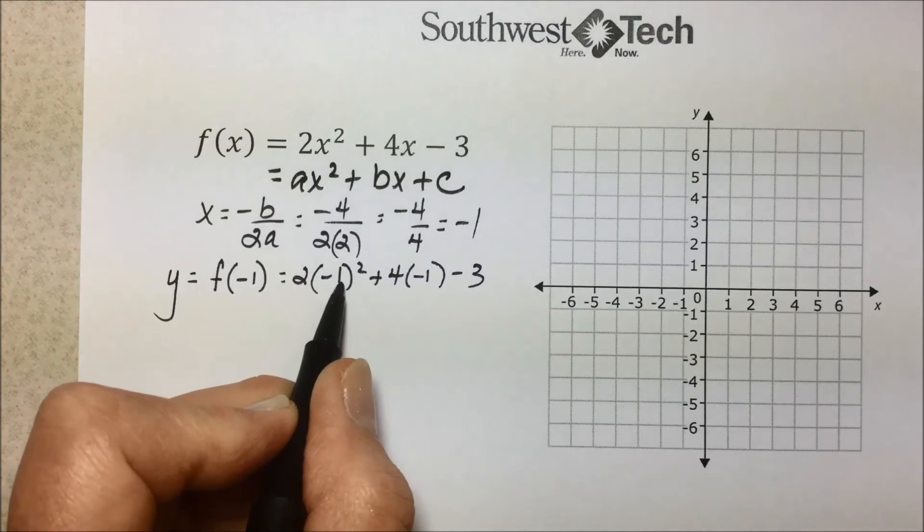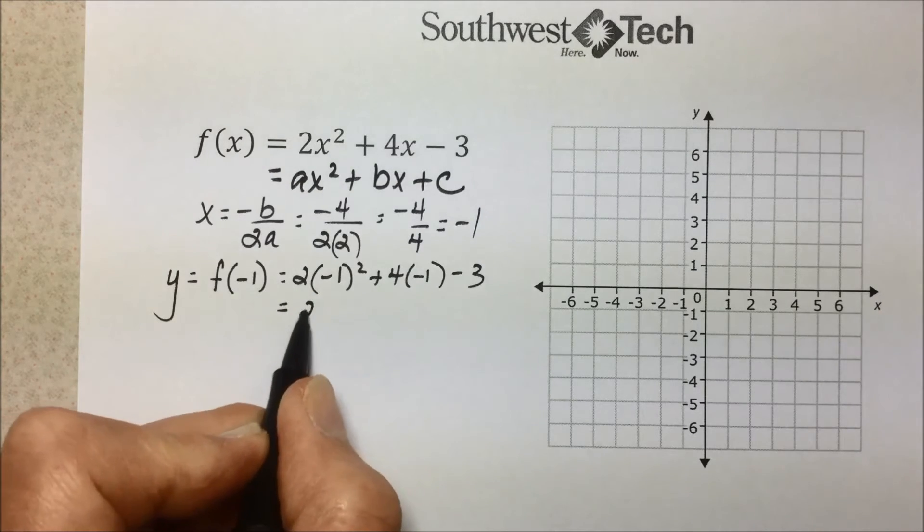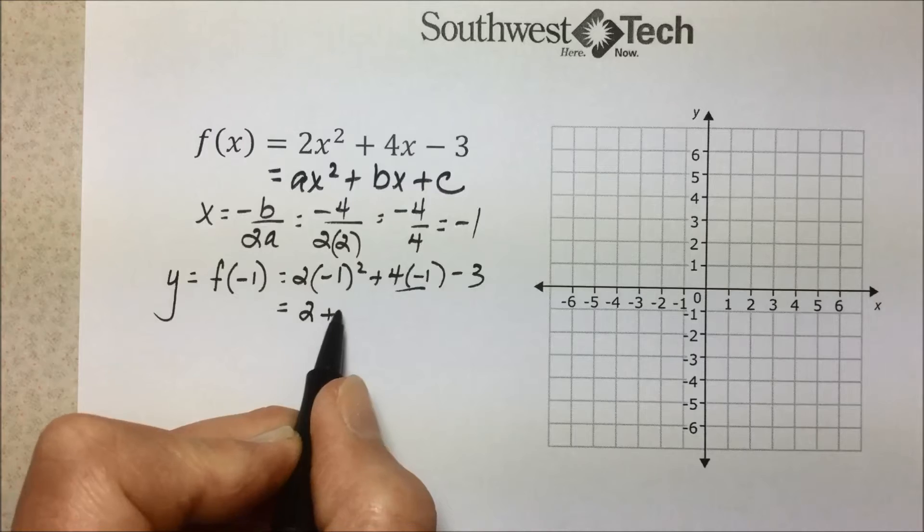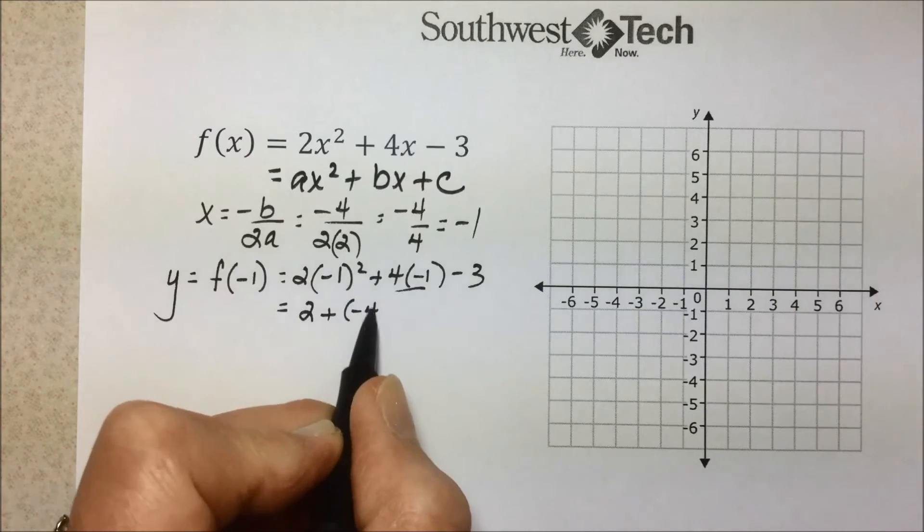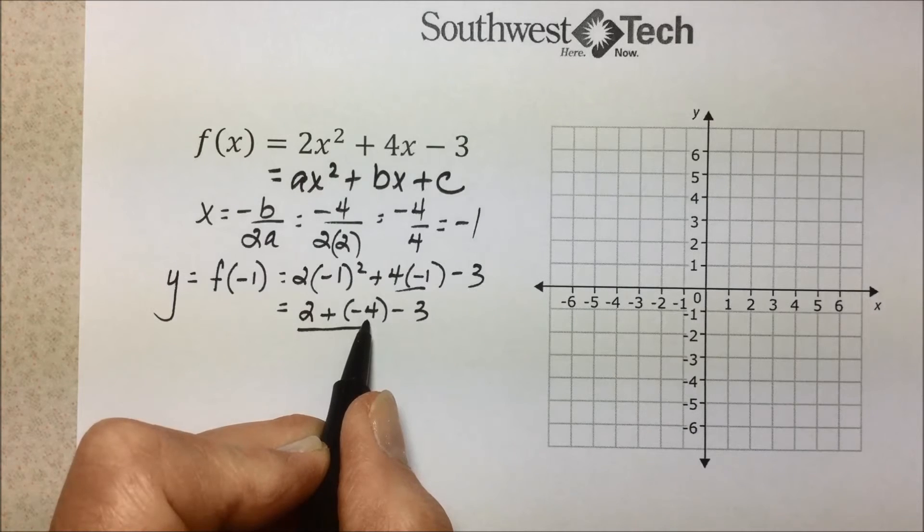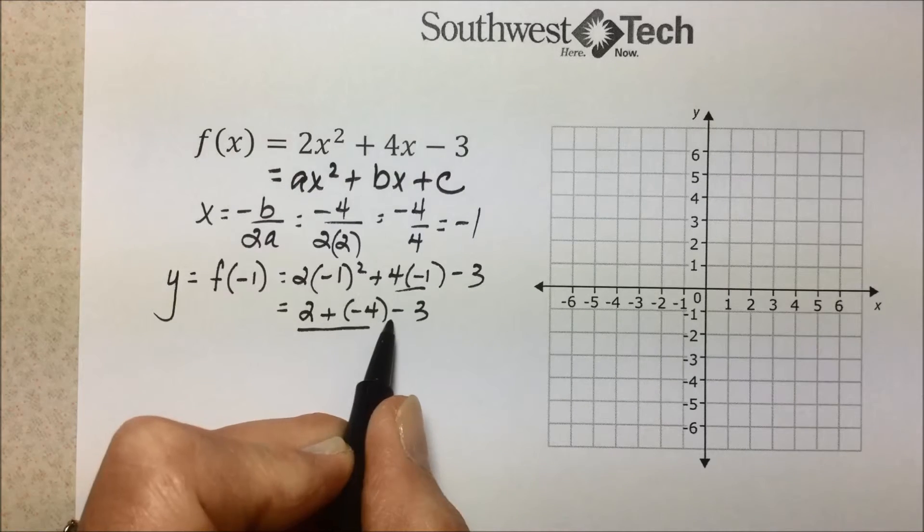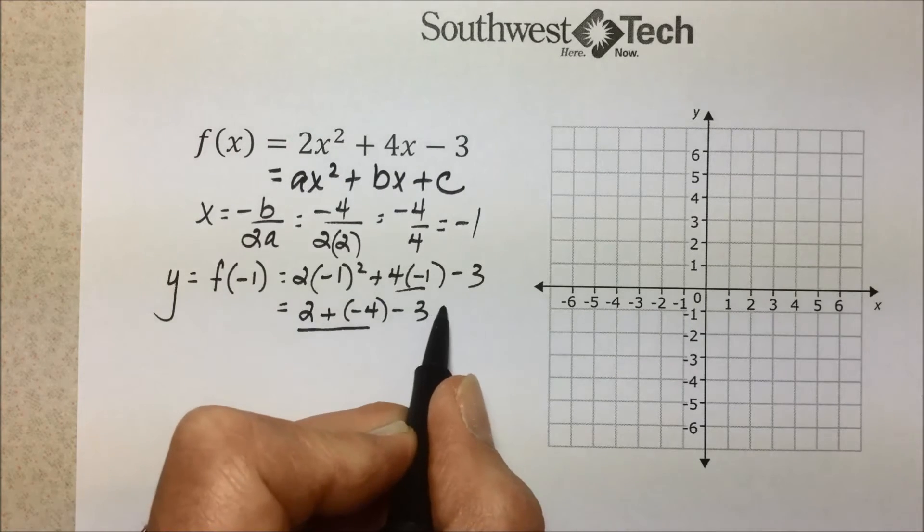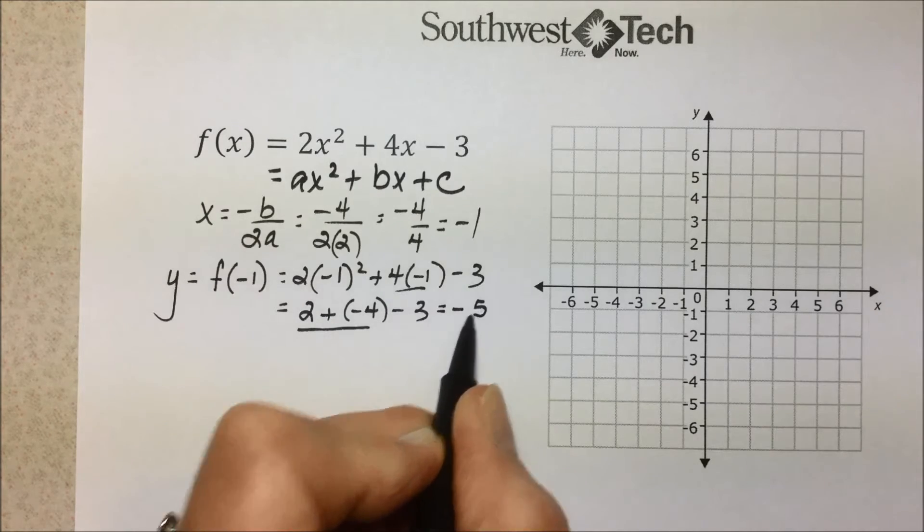Powers first, -1² is 1 times 2 is 2. Multiplying next, we get a -4. Simplifying 2 plus -4 is -2, -2 minus 3 or plus a -3 is -5.